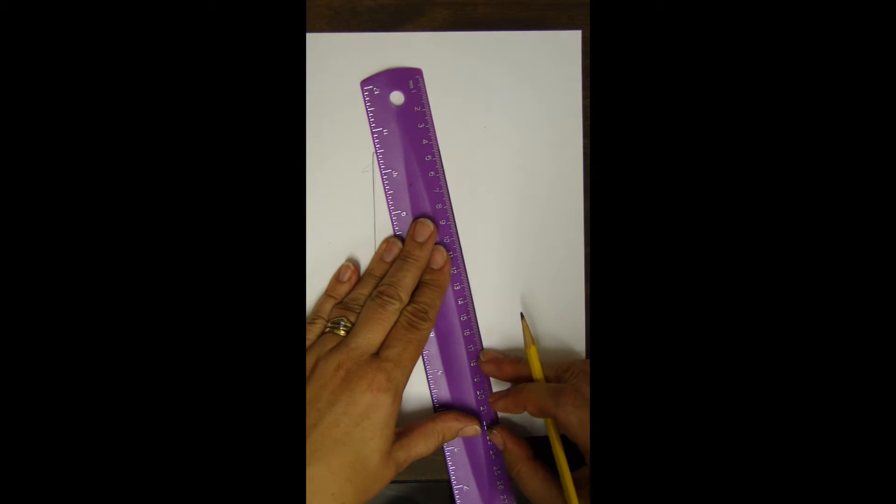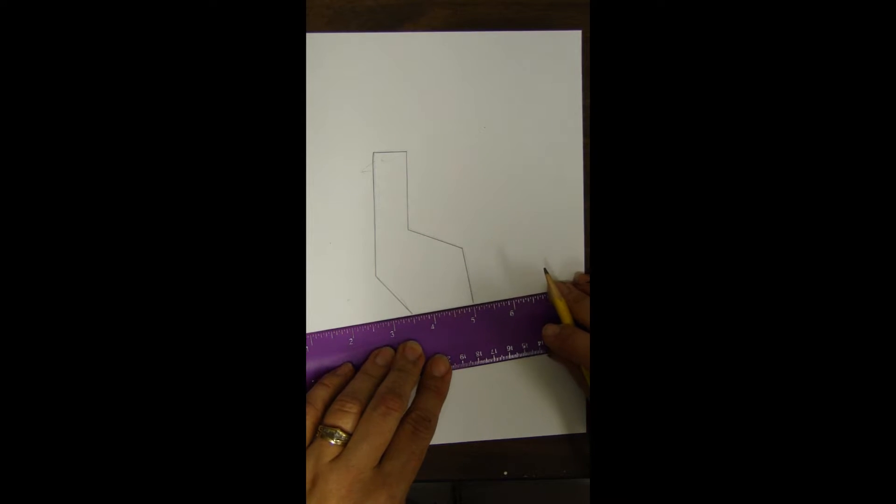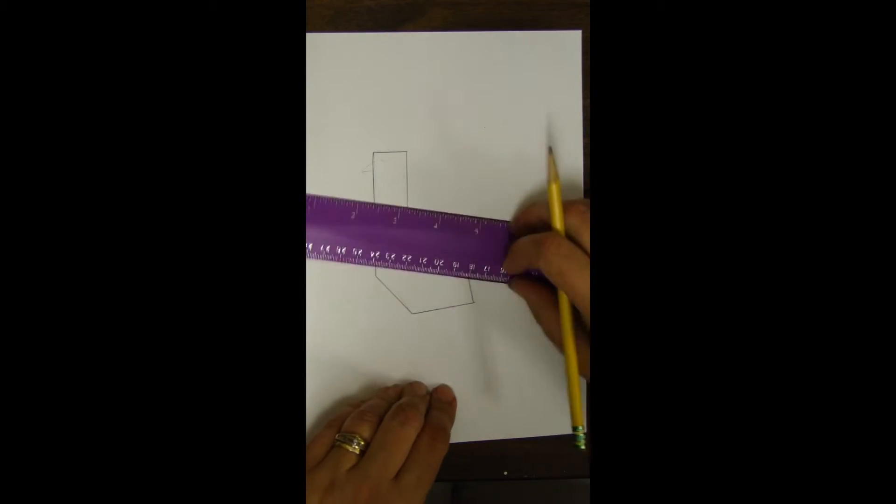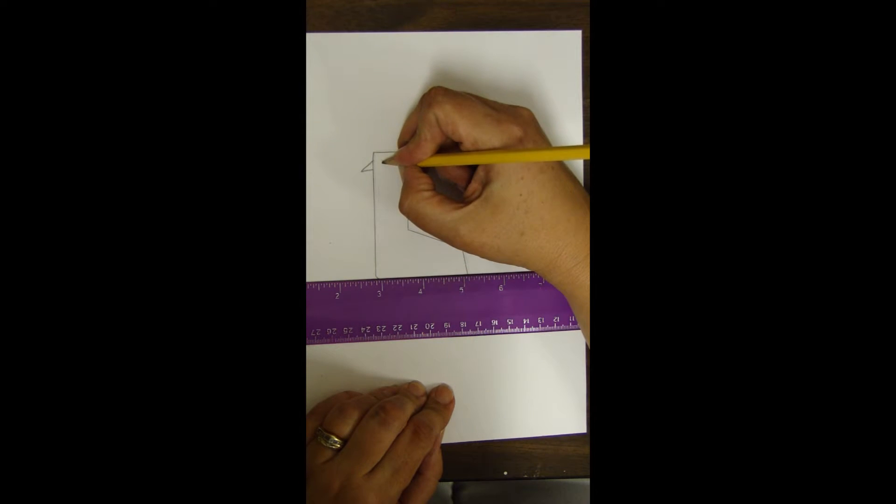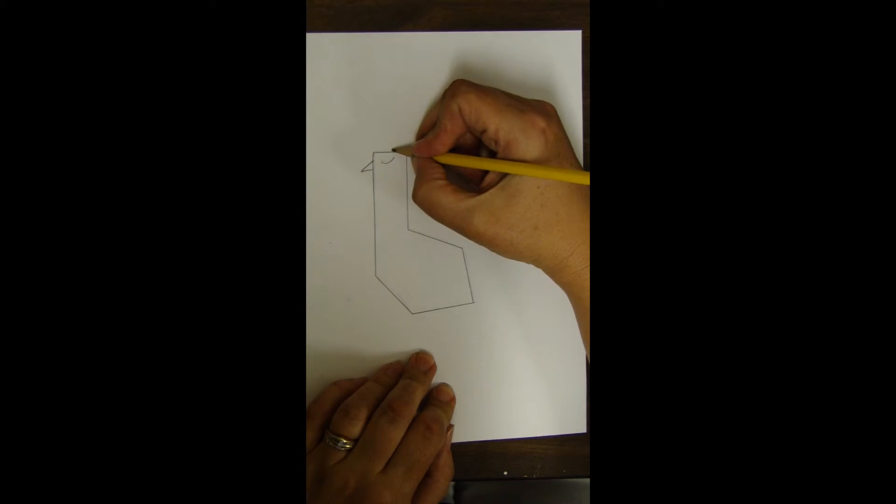Again this is going to be geometrical which means we are using a ruler to make the nice straight lines. There I have the body I'm going to draw on the beak and a closed eye. Then I want to add some feathers on the head coming off the head.